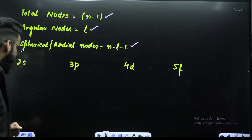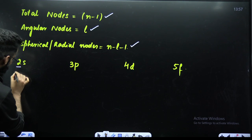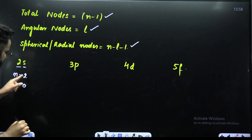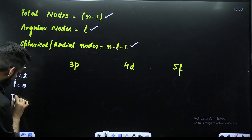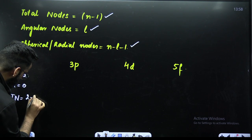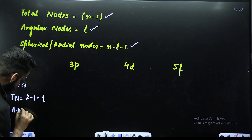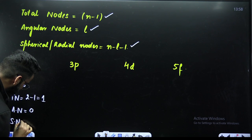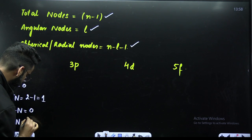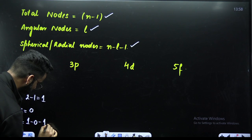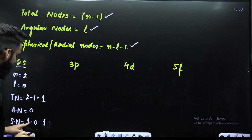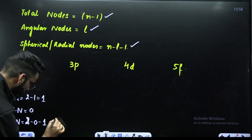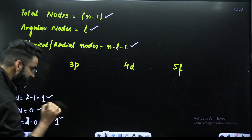Now see the application. For 2S: N = 2, and for the S subshell L = 0. Total number of nodes = N − 1 = 2 − 1 = 1. Angular nodes = L = 0, so there is no angular node. Spherical nodes = N − L − 1 = 2 − 0 − 1 = 1. So the answer comes out to be 1 spherical node.